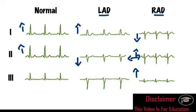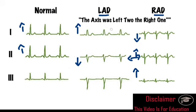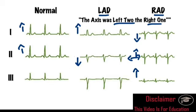An easy way to remember this is the phrase: 'the axis was left to the right one.' This tells you which lead becomes negative in each axis deviation. If lead 2 is negative, it's a left axis deviation. If lead 1 is negative, it's a right axis deviation. The axis was left 2, right 1.